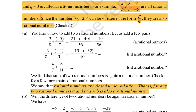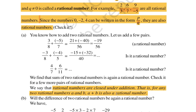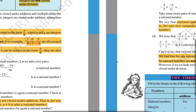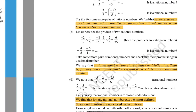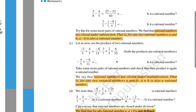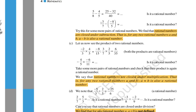For rational numbers and closure property: if you add any two rational numbers, the result is also a rational number — so rational numbers are closed under addition. If you subtract two rational numbers and get a rational number, closure property is followed. Rational numbers are closed under multiplication as well.